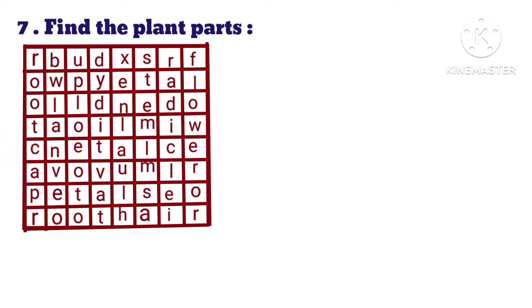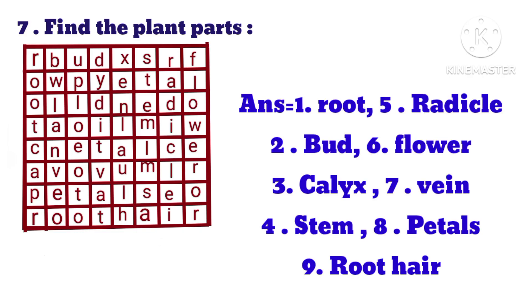Question 7: Find the plant parts. Answer: 1. Root, 2. Bud, 3. Calyx, 4. Stem, 5. Radicle, 6. Flower, 7. Vein, 8. Petals, 9. Root hairs.